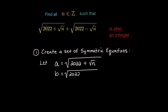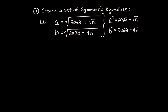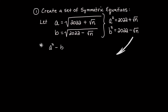Using a and b as those new variables, we can express the equations without some of the radicals by squaring. This allows us to write and set up a system of equations involving a and b. Adding their squares we get a² + b² = 4044, and multiplying their squares yields 2022² minus n.